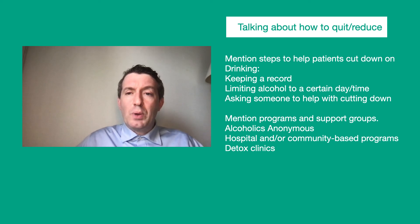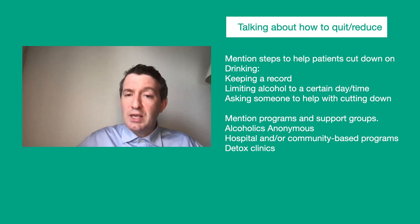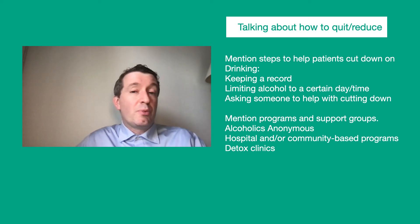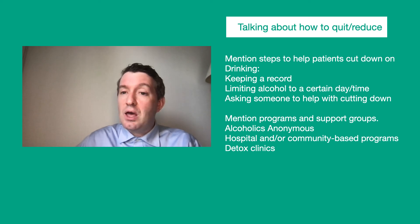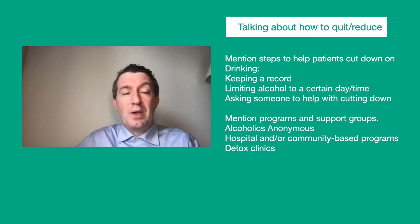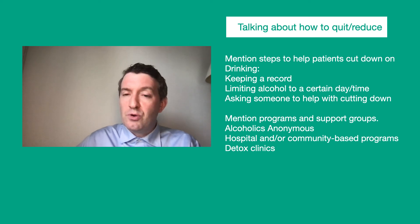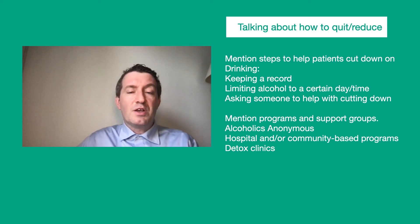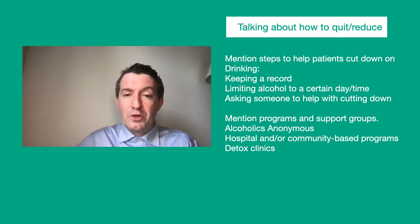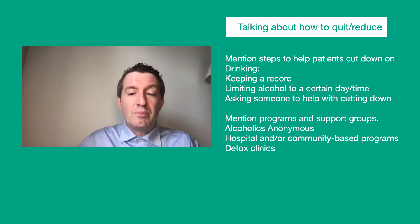Talking about how to quit and reduce: mention steps to help patients cut down on drinking. One is to keep a record and limit alcohol to a certain day or time. Ask someone to help with cutting down — a family member or loved one. Mention programs and support groups. Alcoholics Anonymous is a popular group in the United States; however, hospital-based or community-based programs can help a lot. Detox clinics are a last resort, but that might be something you can mention.